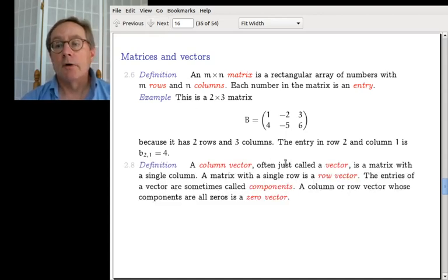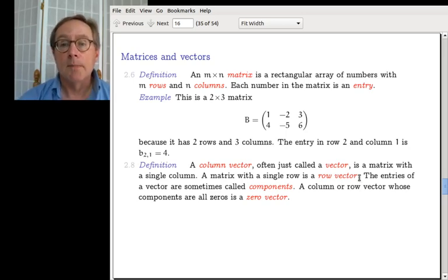A column vector, often just called a vector, is a matrix with a single column. If a matrix has a single row, it's called a row vector. And again you may have seen these things where they have some meaning and we'll get to those soon enough, but at the moment we're just simply using them as places to hold numbers. The entries of a vector are sometimes called components. Instead of entry you often call it component. And the column or row vector whose components are all zeros is the zero vector, happens to come up a lot in practice.